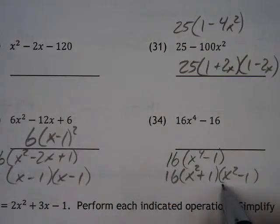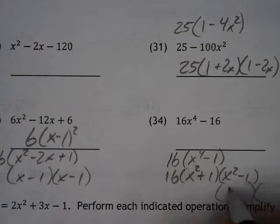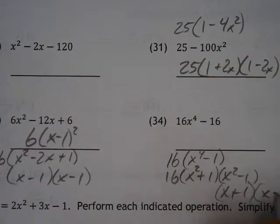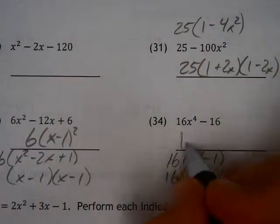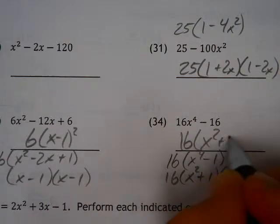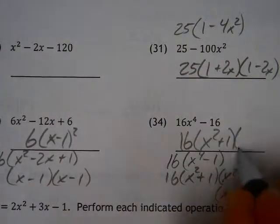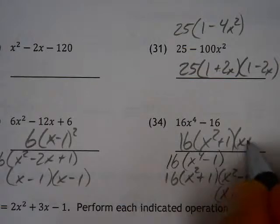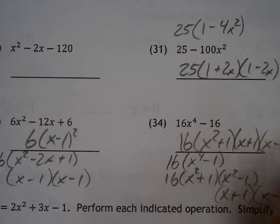with the 16 still out in front. But lo and behold, this factors even further to x plus 1 and x minus 1. So the fully factored form, the FFF, is x squared plus 1, which cannot be factored any further, but then this one that did is x plus 1 and x minus 1.